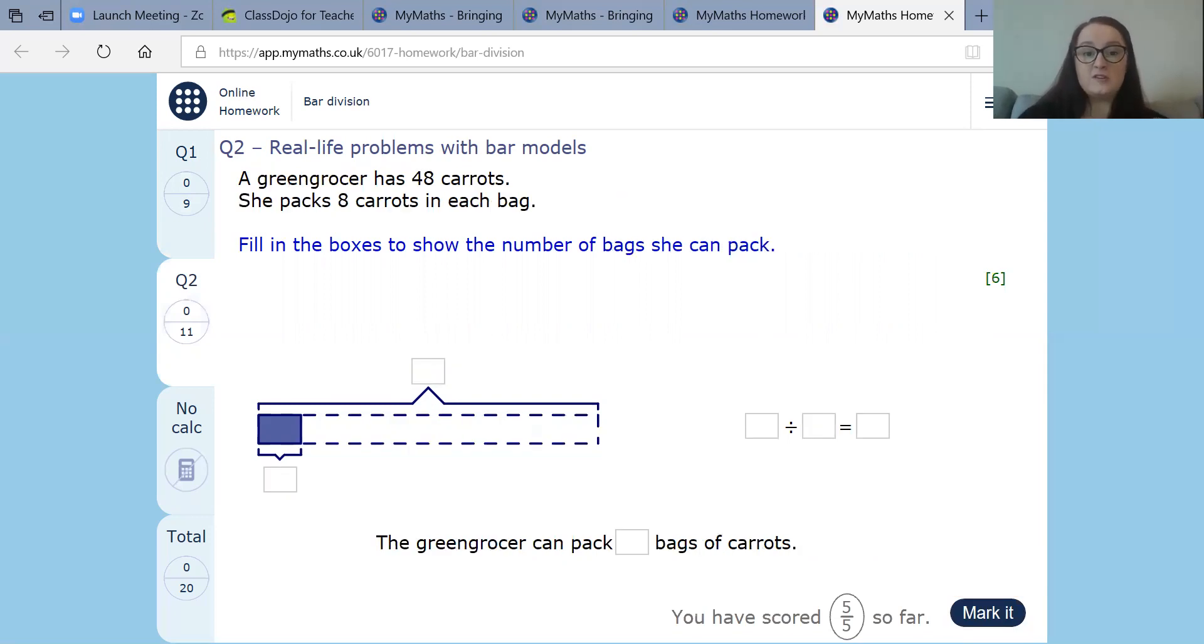So a greengrocer has 48 carrots. So we've got that information already. We know that this number is going to be 48 and we know that this number here is going to be 48. Now it says she packs eight carrots in each bag. So we know that this is going to be split into eight different parts. So we're going to be dividing by eight. Now what we need to do, we need to figure out how many eights. Oh no, no. Miss Dunn's jumping ahead. We know that this, sorry, is eight because we're dividing by eight.